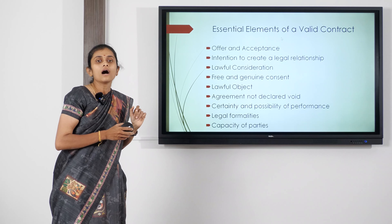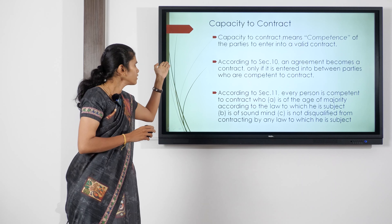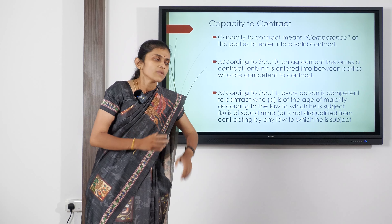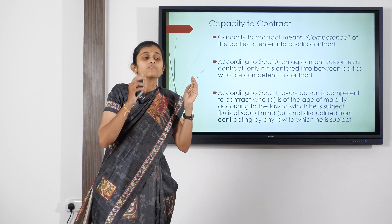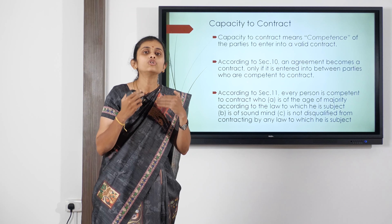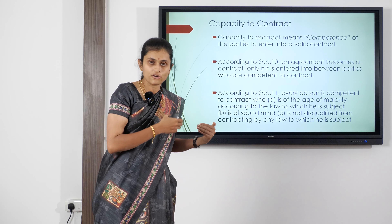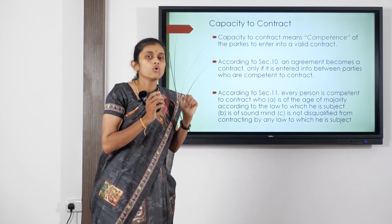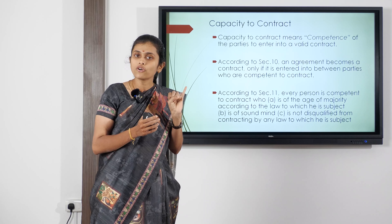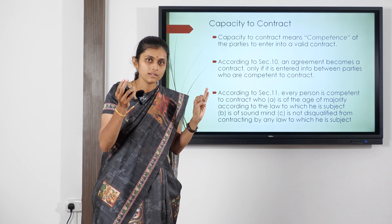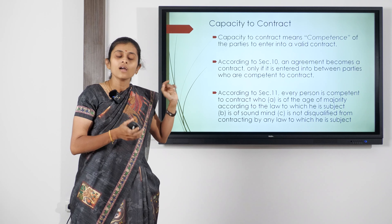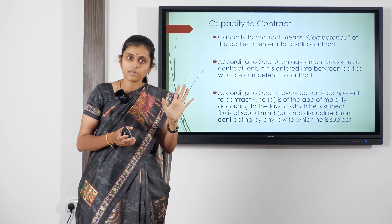Now coming to our main topic — capacity to contract is one of the essential elements of a contract. The parties entering into a contract must be competent parties; only when an agreement is entered into by competent parties does it become legally enforceable. According to Section 11, competent persons are: any person who has attained the age of majority, any person who is of sound mind, and any person not disqualified by law.